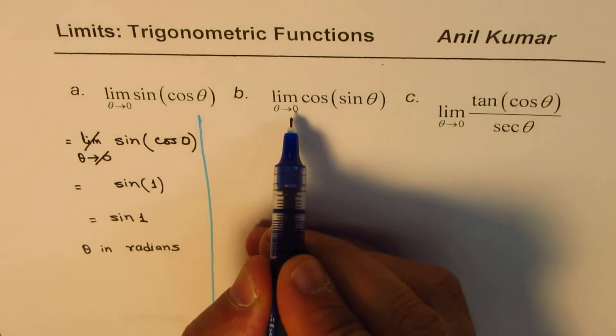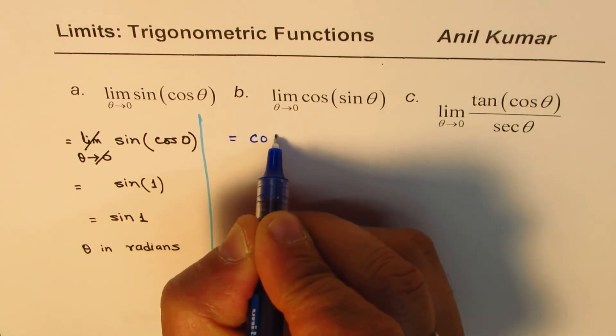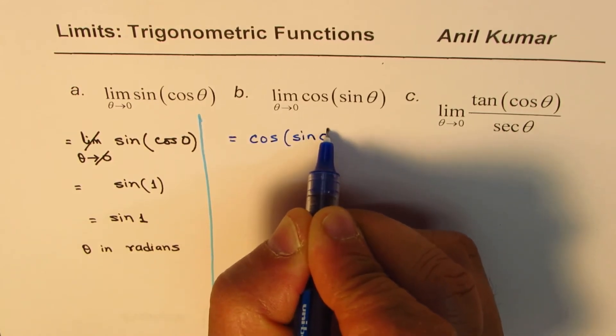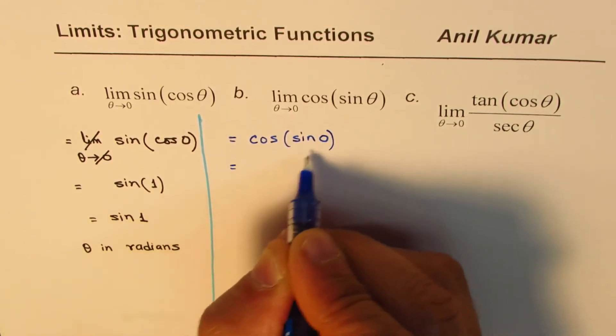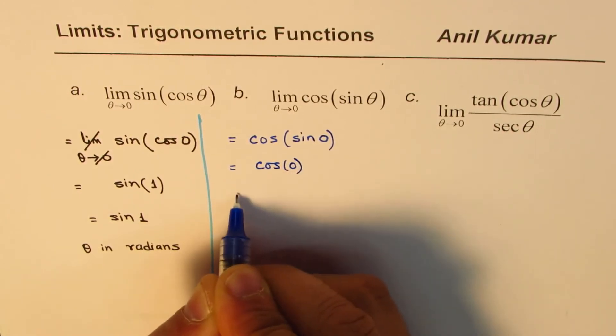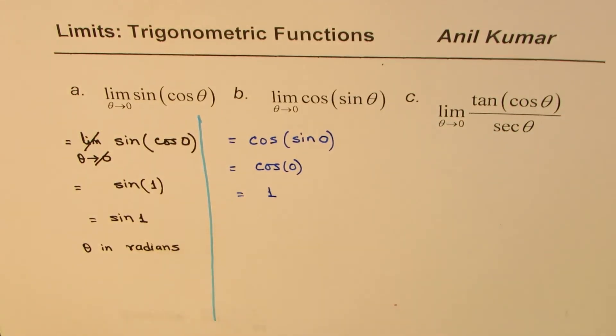I'll again substitute 0 for theta. So I'll get this limit as equals to cos of sine 0. Sine 0 is 0. So we get cos of 0. And cos 0 is 1. Therefore, this limit equals 1.